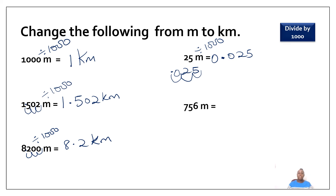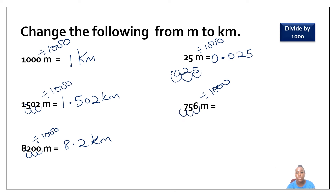I have seven hundred and fifty-six meters and I like to change it to kilometers. So I divide by one thousand. I need to shift my decimal point three times to the left — one, two, three — so I'm getting zero point seven five six kilometers.